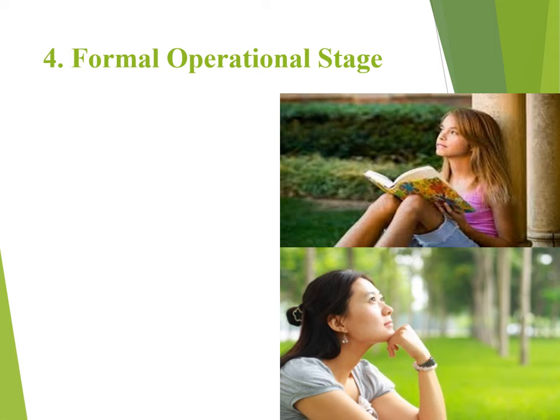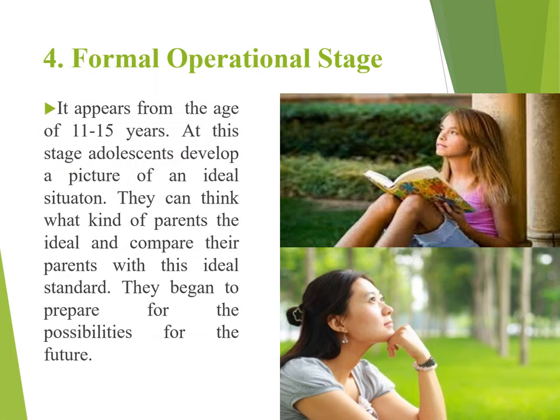The last stage is the Formal Operational Stage, appearing from the age of 11 to 15 years — also called adolescence. At this stage, adolescents develop a picture of an ideal situation. They can think about what kind of parenting is ideal, compare their parents with an ideal standard, and begin to prepare for the possibilities of the future.